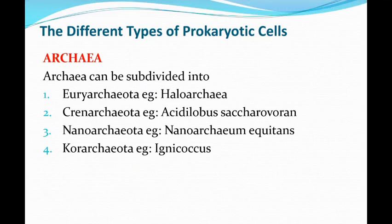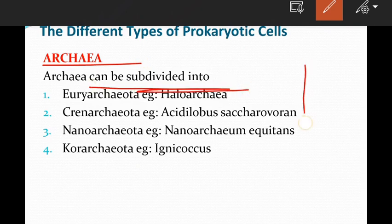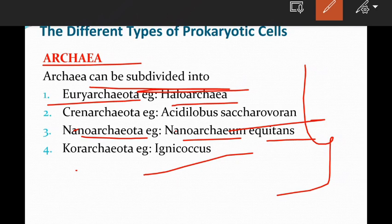Different types of prokaryotic cells — the first one is Archaeobacteria, which can be subdivided into four types: Euryarchaeota (example: Haloarchaeota), Crenarchaeota (example: Acetolobus saccharovorans), Nanoarchaeota (example: Nanoarchaeum equitans), and Korarchaeota (example: Ignicoccus).